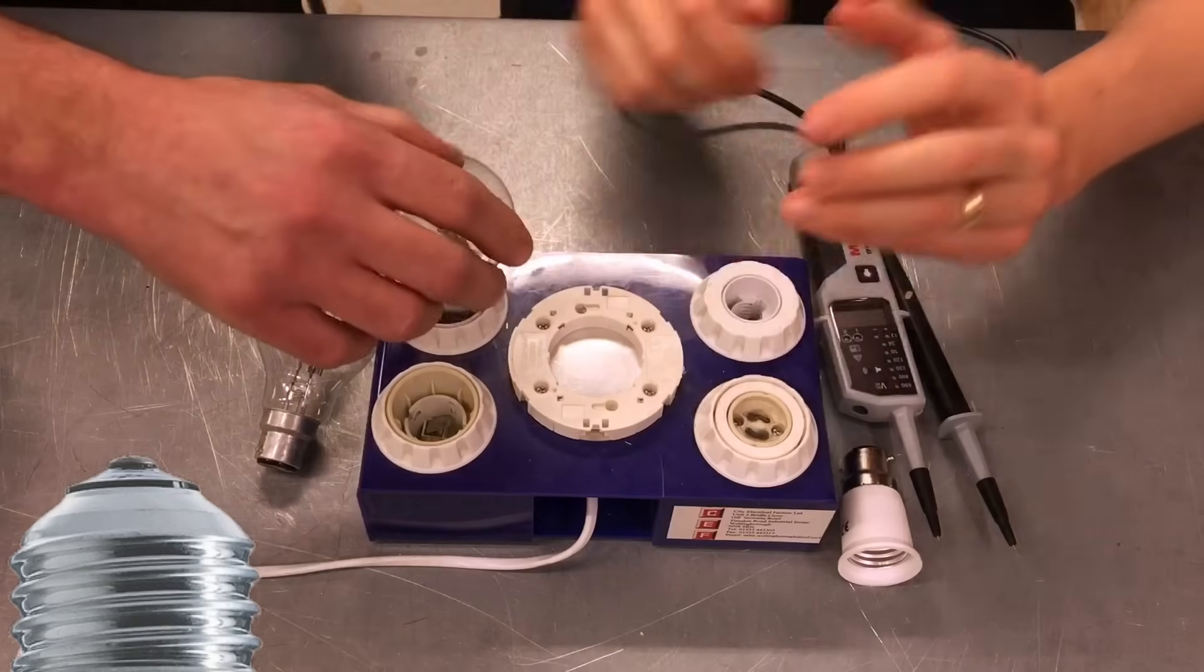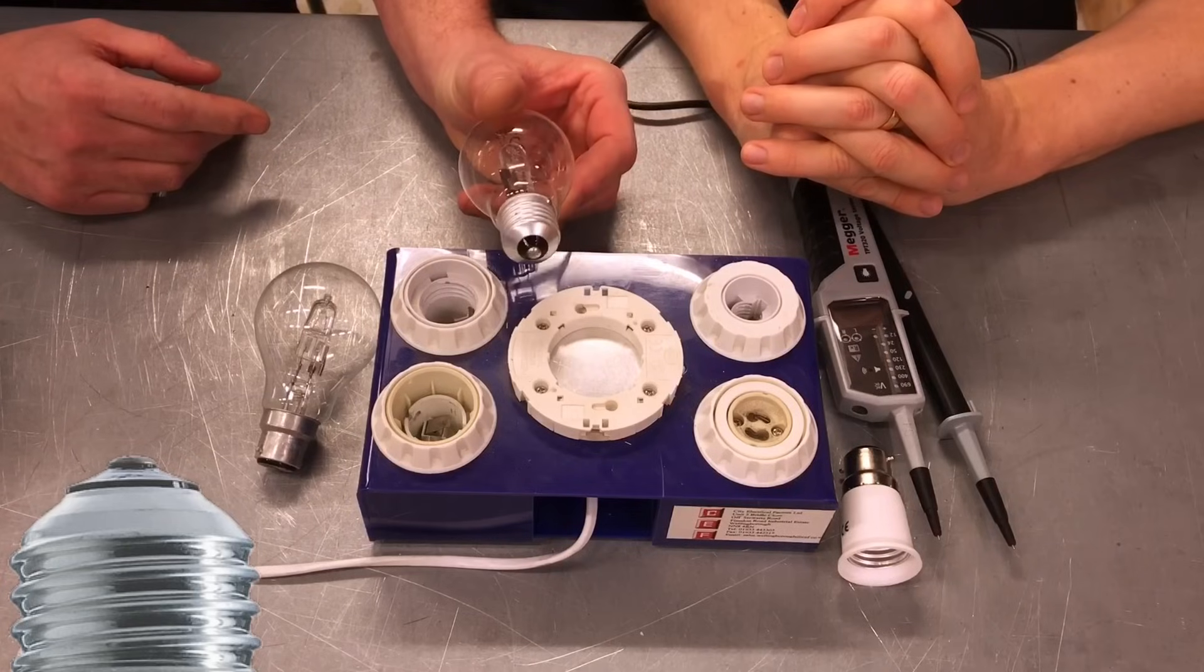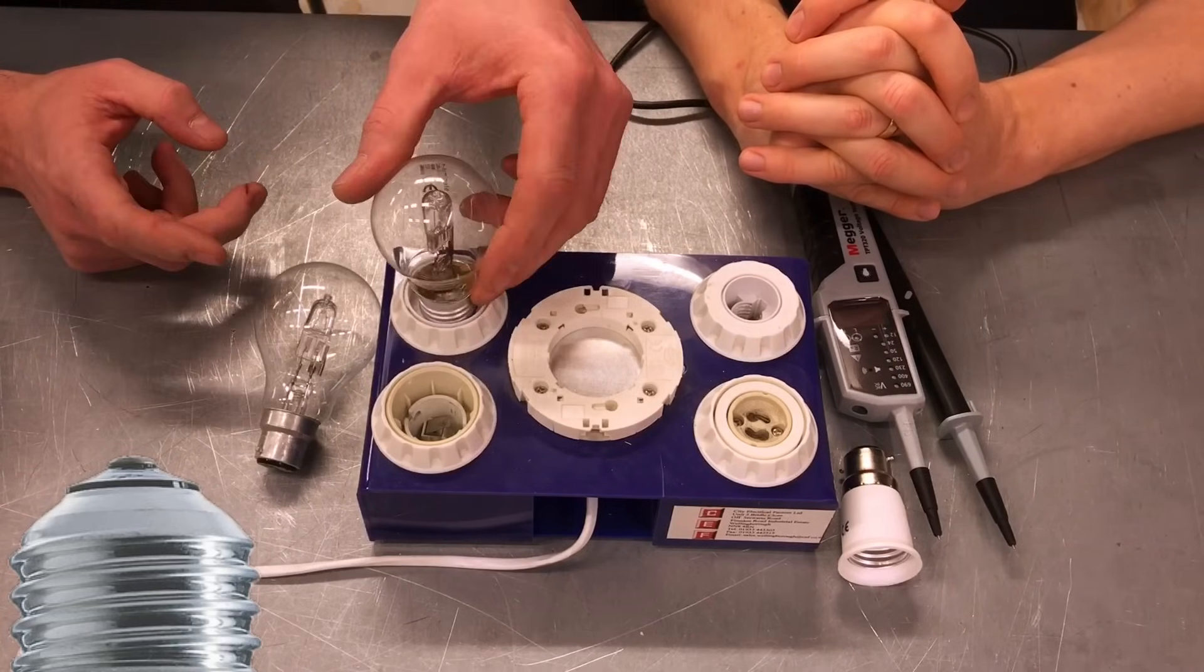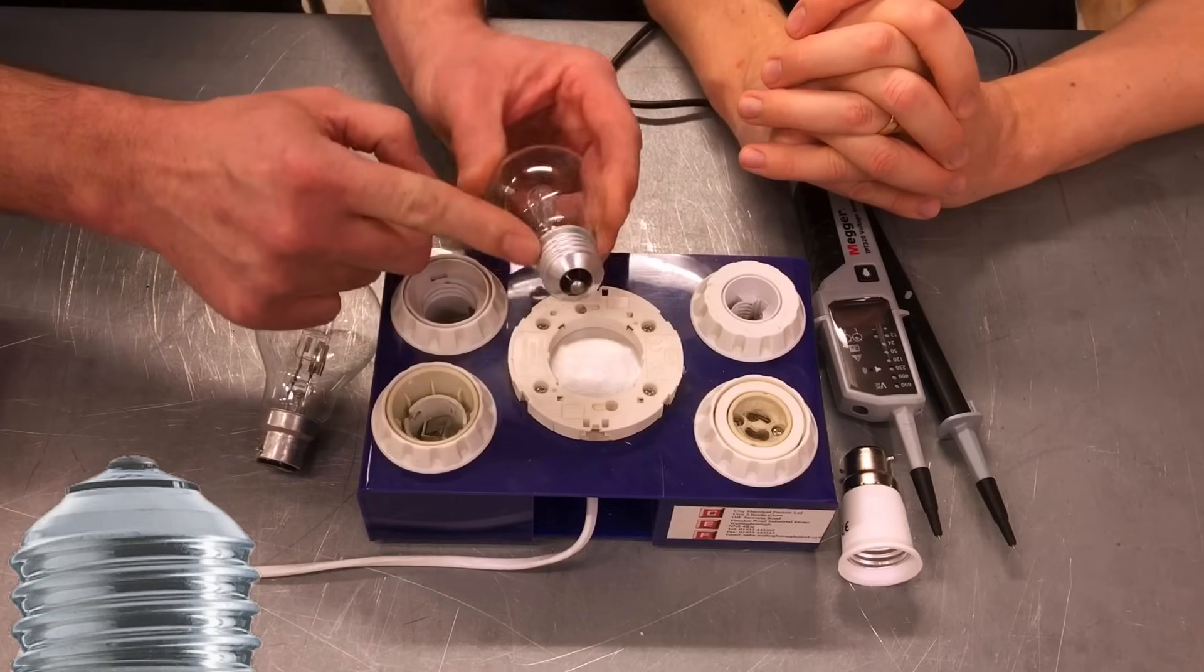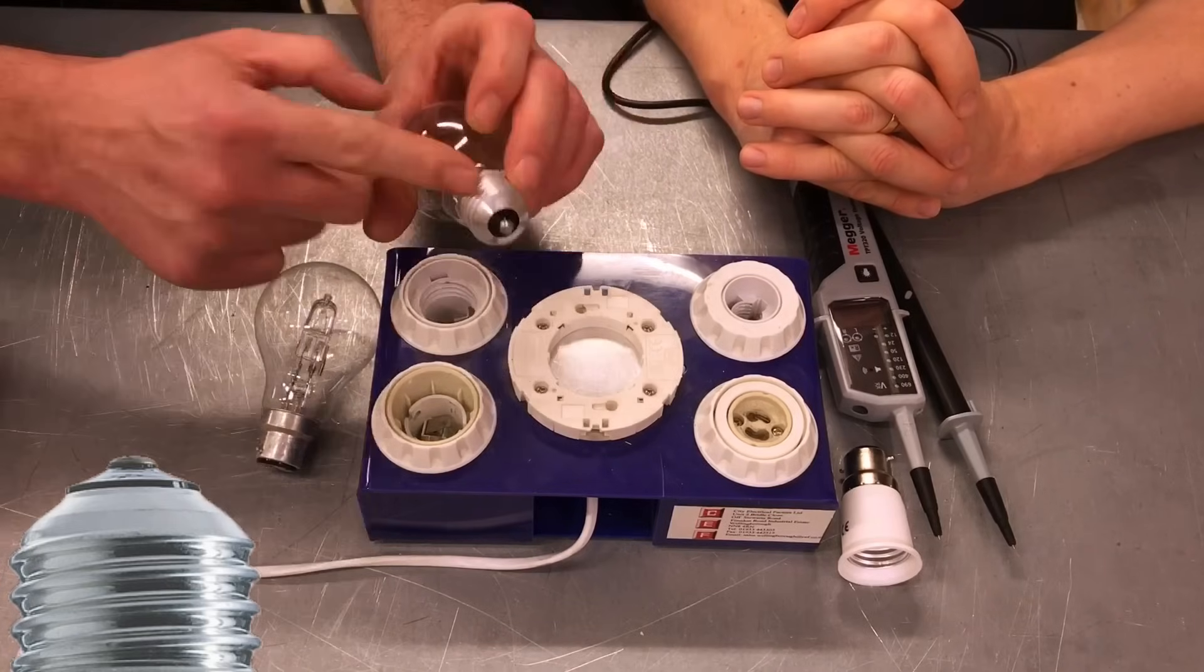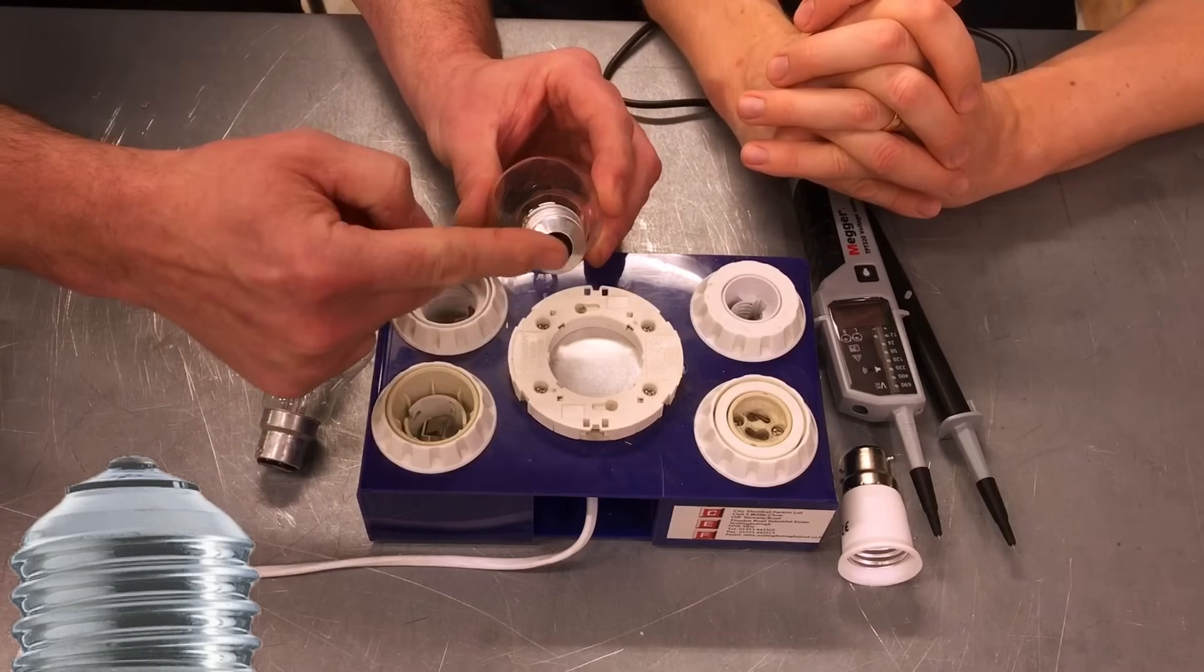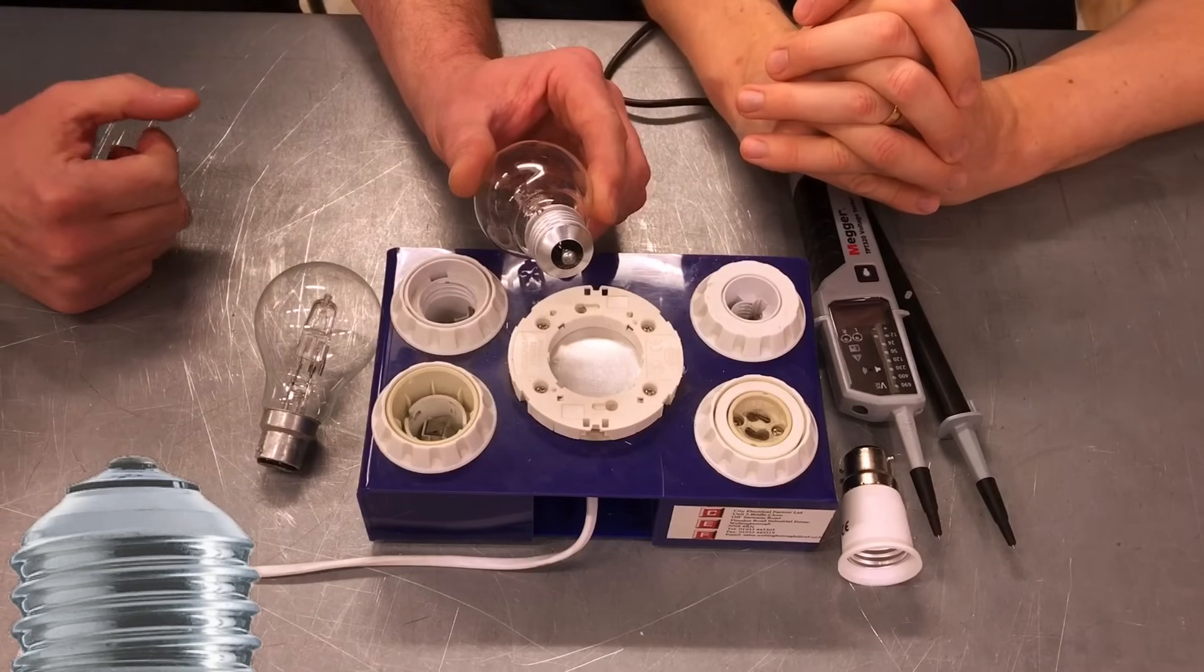BS-7671 requires us to prove polarity of all Edison screw lamp holders, being line and neutral, because when we insert it into here like so and start screwing it down, we can actually touch the screwed element. If that screwed element here was actually connected to the line conductor, as the customer goes to screw it in, they can certainly touch the screwed part connected to line, obviously a massive risk of electric shock. So it's vitally important that we get the line conductor here and the neutral conductor here, and we prove it during our testing process.